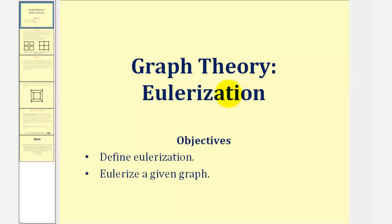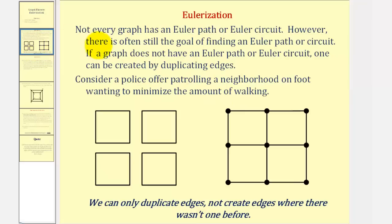Welcome to a lesson on Eulerization. Not every graph has an Euler path or Euler circuit. However, there is often still the goal of finding an Euler path or circuit. If a graph does not have an Euler path or circuit, one can be created by duplicating edges.